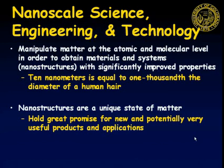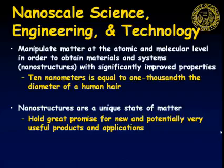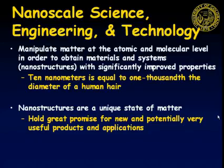The sciences of nanoscale engineering and technology deal with the area of manipulating matter at the atomic and molecular level. By doing that, we're able to generate nanostructures, and these nanostructures have improved properties. For example, 10 nanometers is equal to 1,000 times the diameter of a human hair. These nanostructures are really holding great promise for new and potentially useful products and applications.